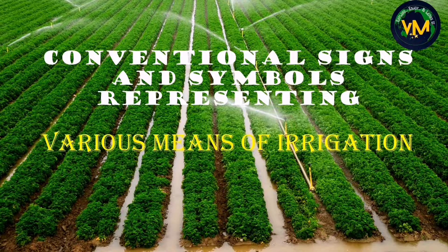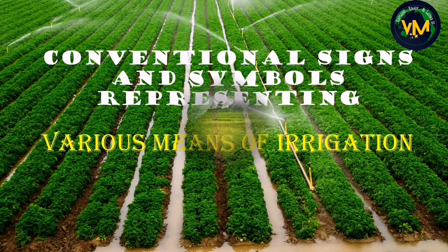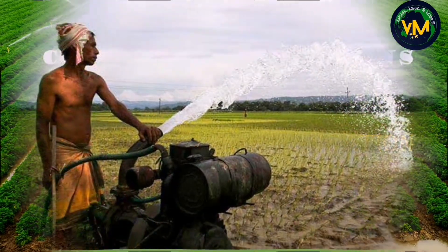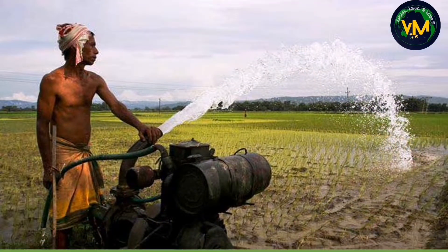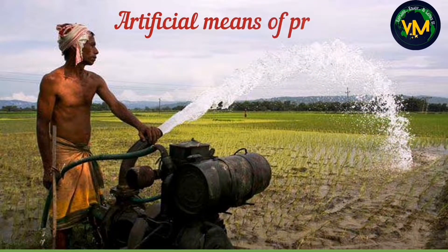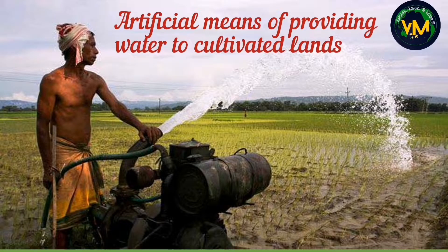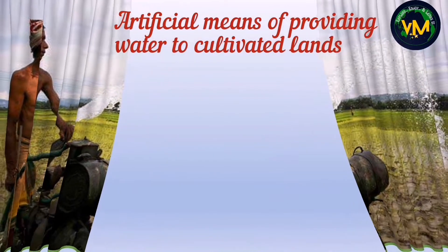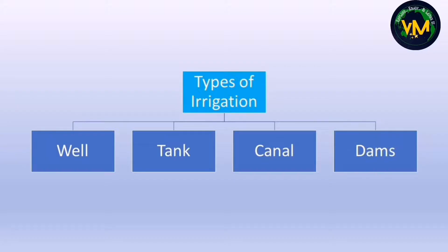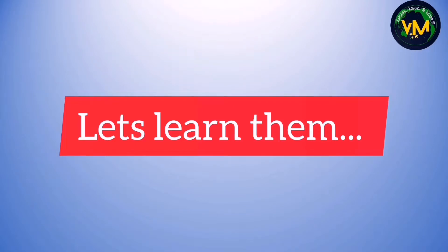What is irrigation? It is the artificial means of providing water for agricultural lands to cultivate crops. There are 4 major types of irrigation: well irrigation, tank irrigation, canal irrigation, and through dams. Let's learn them one by one.